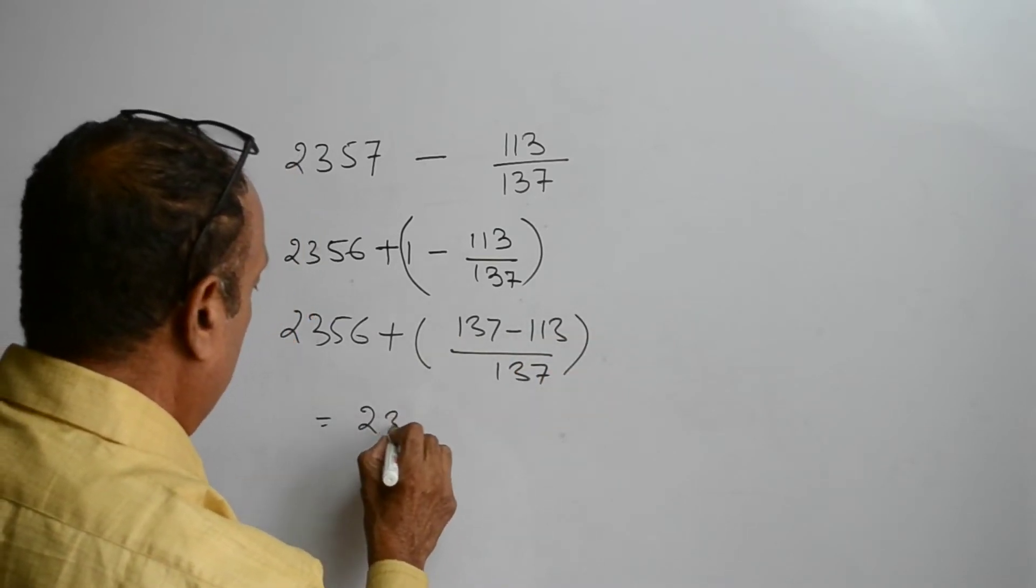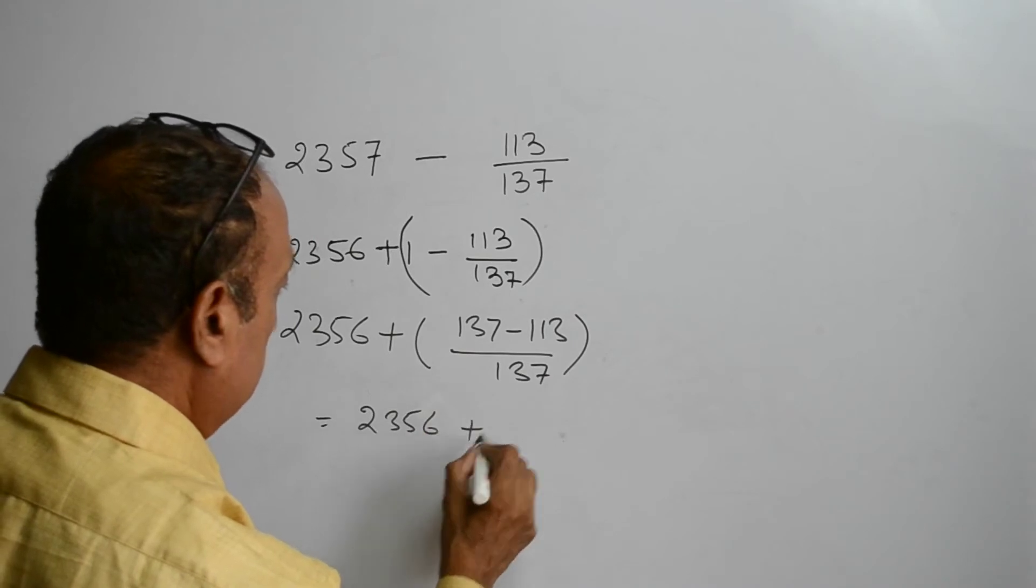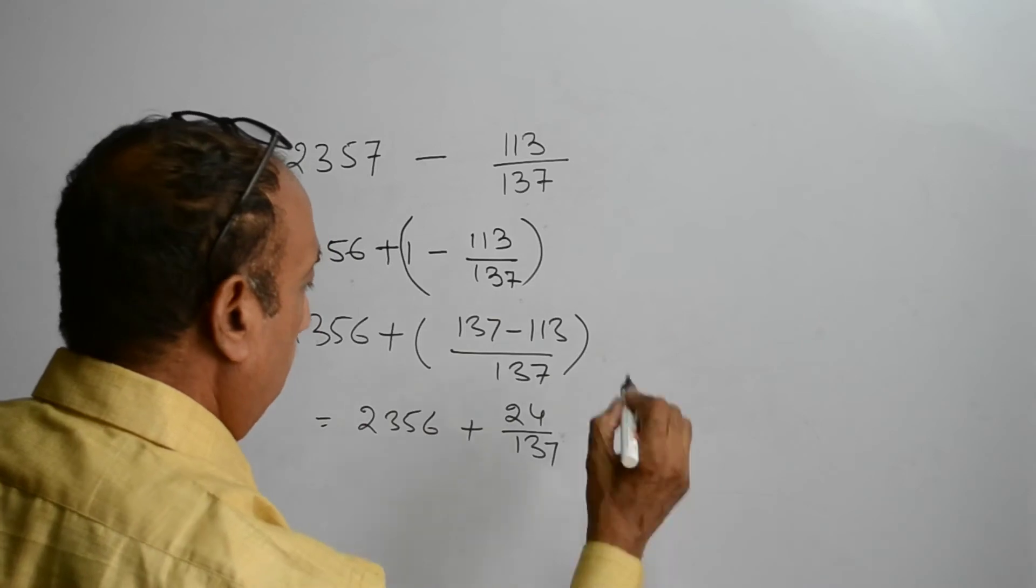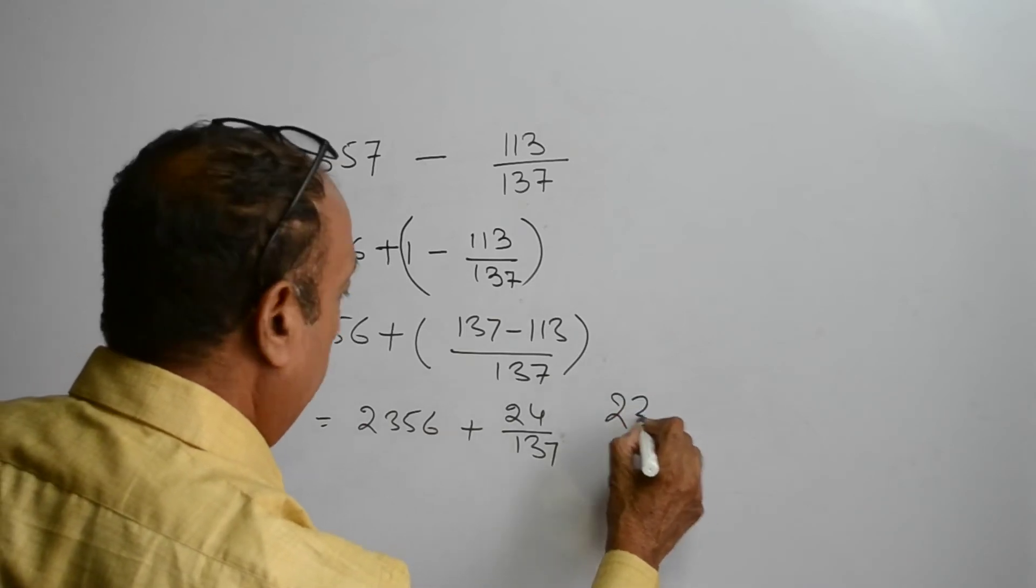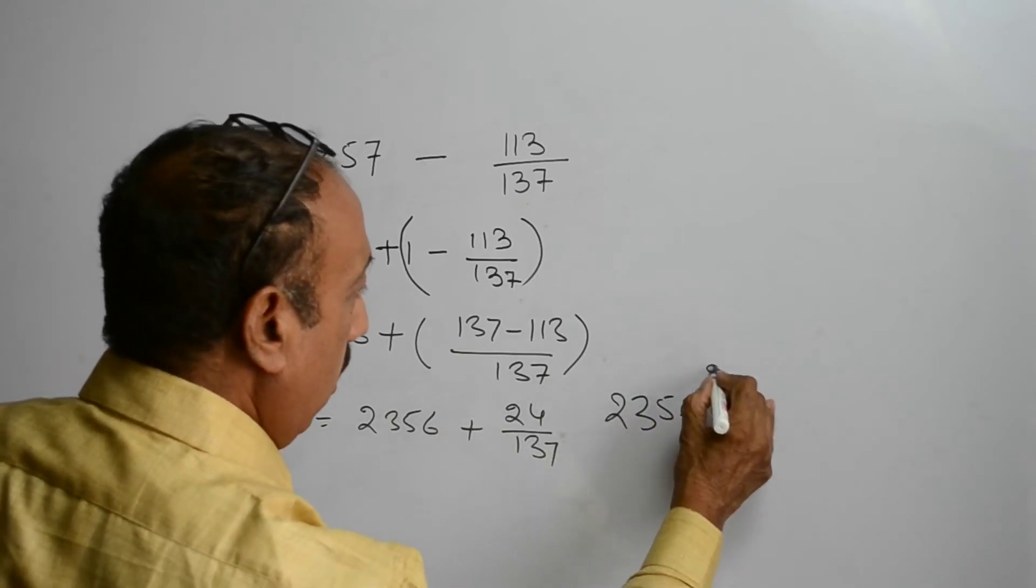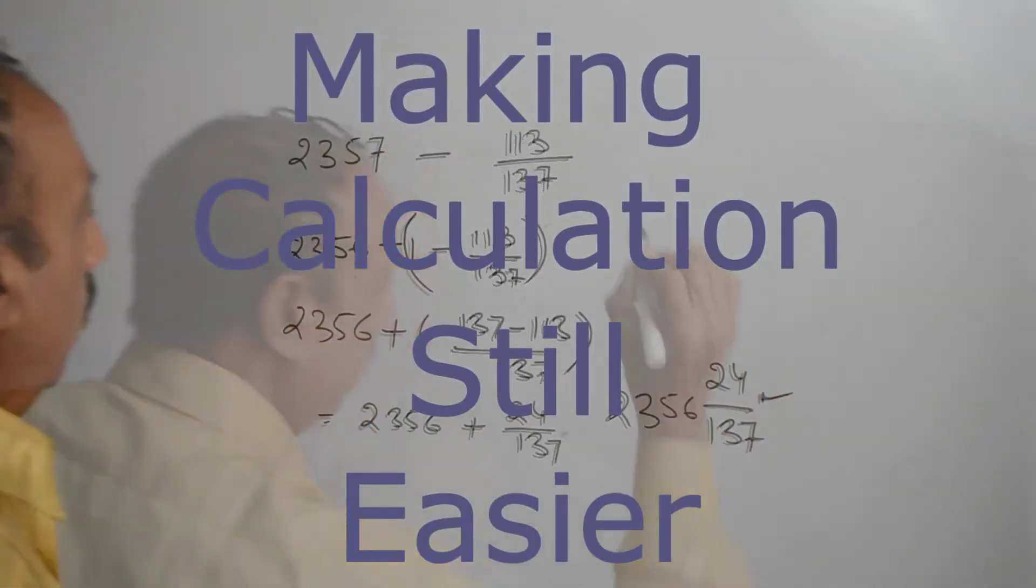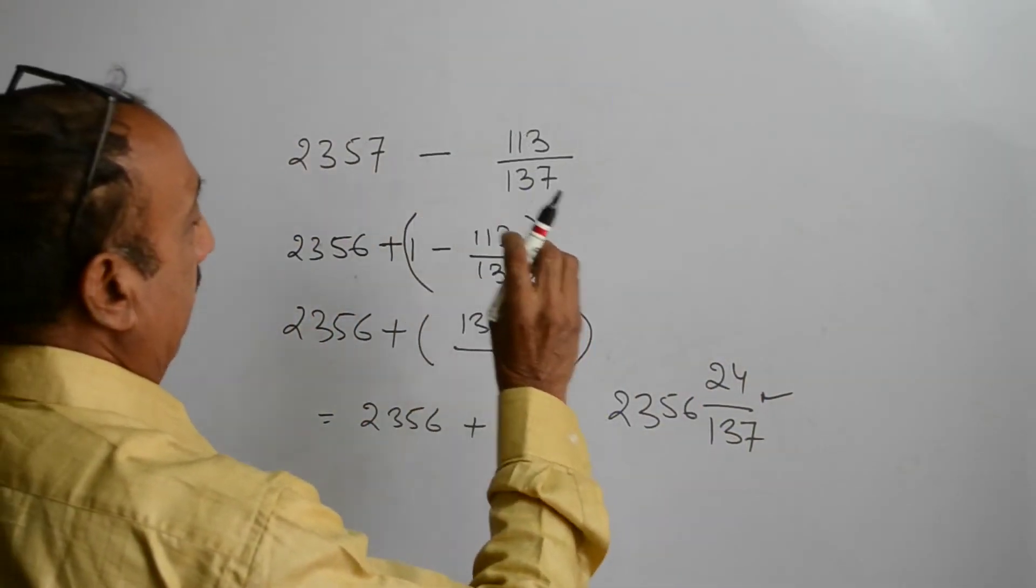So the final answer will be 2356 and 24 upon 137. We can make the calculations much easier by avoiding all these calculations.